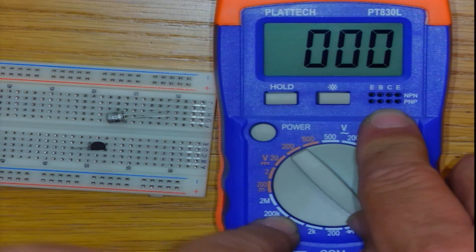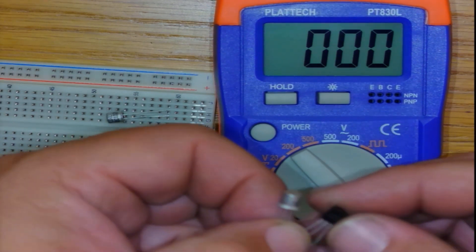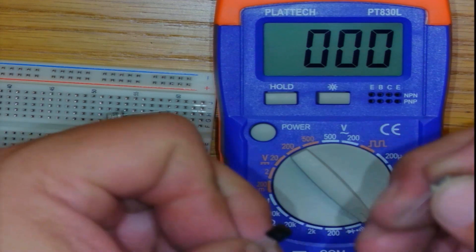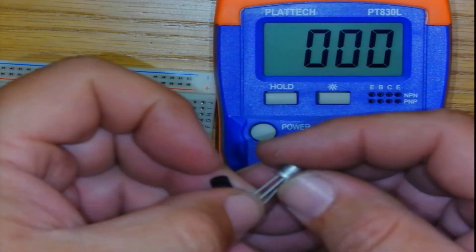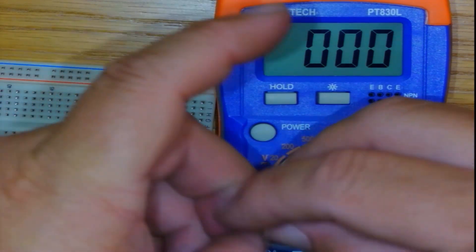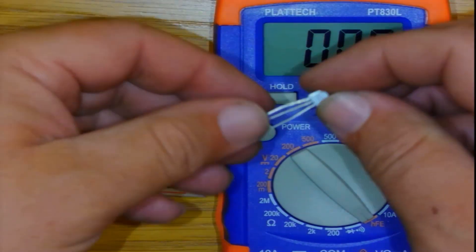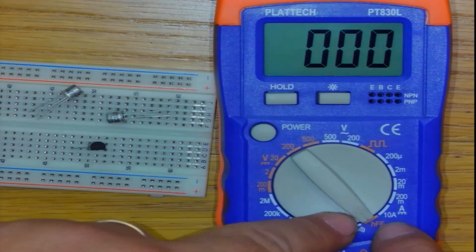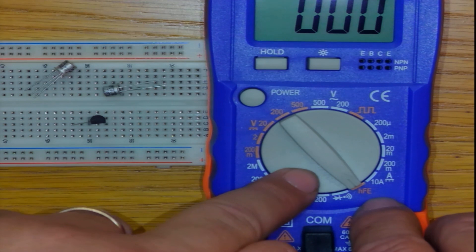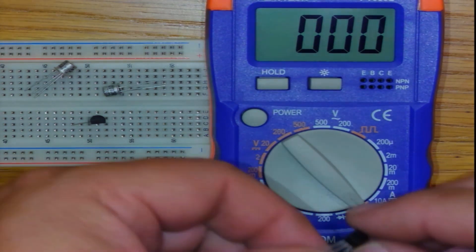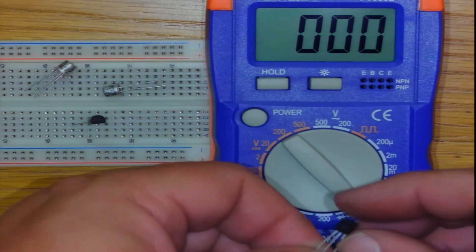And then secondly, it tells me what is the internal gain, the HFE or the DC beta of that component. So if I take a transistor and I'm not sure as to what the arrangement of legs are, I make sure that my meter is here by HFE, which is an H parameter indicating the gain of the transistor.